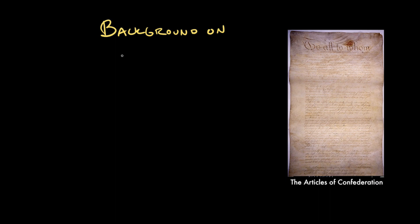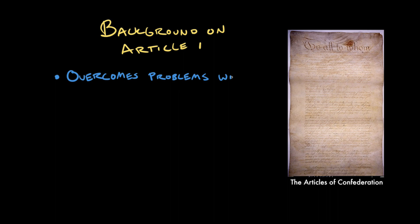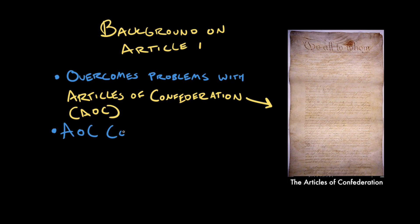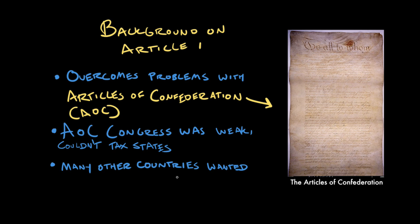Article 1 gives an enormous amount of power to the legislative branch, otherwise known as Congress, and it was designed specifically to overcome some of the problems they'd seen under the Articles of Confederation. The legislative power under the Articles of Confederation was pretty weak, in part because Congress under the Articles didn't have the authority to directly tax the states. They also lacked many other powers eventually given to Congress under the Constitution. If you're building a young nation, you need to be able to do certain things to protect it, especially when many other countries were circling around wanting to grab land and power.